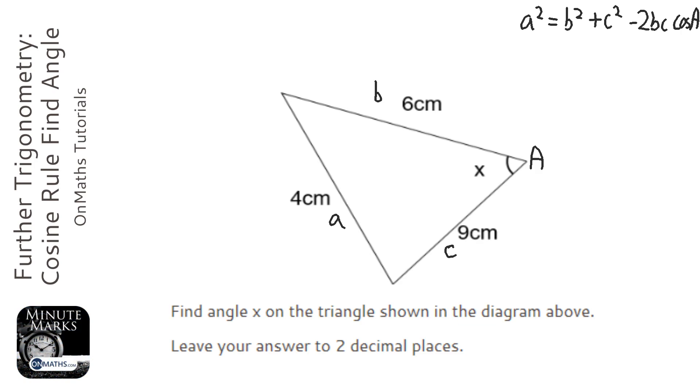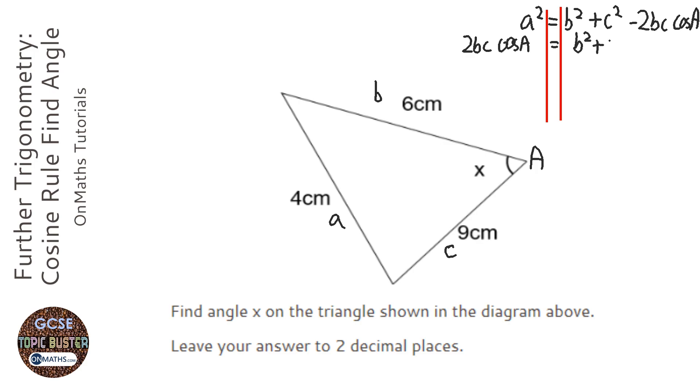Okay, now because we're trying to find the angle, I'm going to have to rearrange the equation. So let's do that now. Rearrange the formula, I should call it. I'm going to plus 2bc cos A both sides, and I'm going to minus a squared from both sides. So you end up with 2bc cos A equals b squared plus c squared minus a squared.